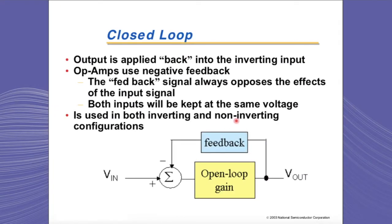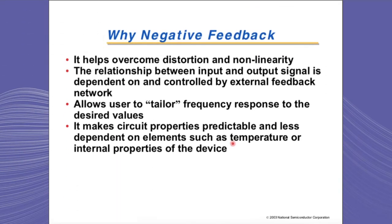Closed-loop reduces the gain of the amplifier; however, it adds stability, and op-amps are used in closed-loop configurations. In closed-loop configuration, part of the output signal is applied back into the inverting input of the amplifier, creating negative feedback, which is generally the type of feedback used in op-amps. Positive feedback is mainly used in oscillators. In op-amps, the feedback signal is always opposing the effect of the input signal.